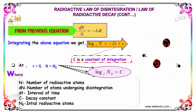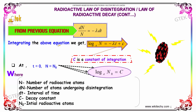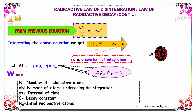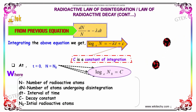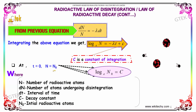From the previous equation, we get dN/N = -λ dt. Integrating the above equation, we get: ln(N) = -λt + c, where c is the constant of integration. At t = 0, N becomes N₀, so we get ln(N₀) = c.